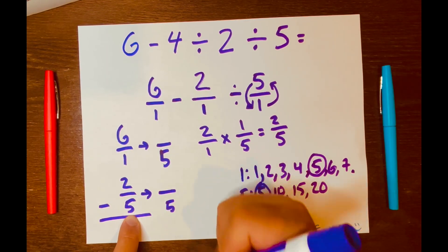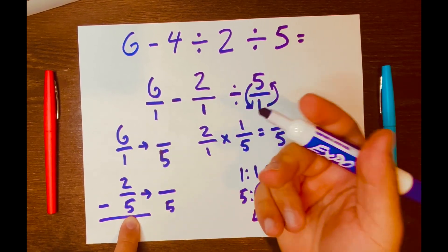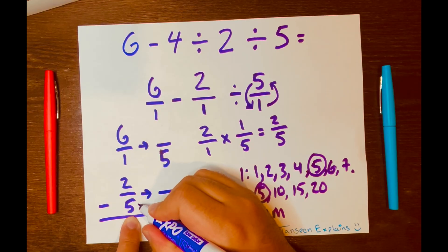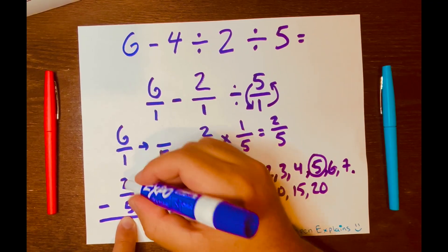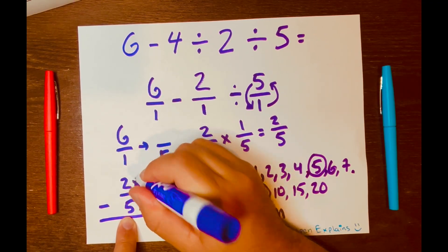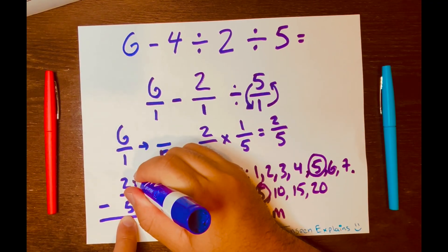And then we multiply the original denominator by a number that will equal the lowest common multiple. So 5 times what gives me 5? 1. So 5 × 1 = 5. And then what you do here, you do the same on top, or in other words, the numerator. So 2 × 1 is 2.